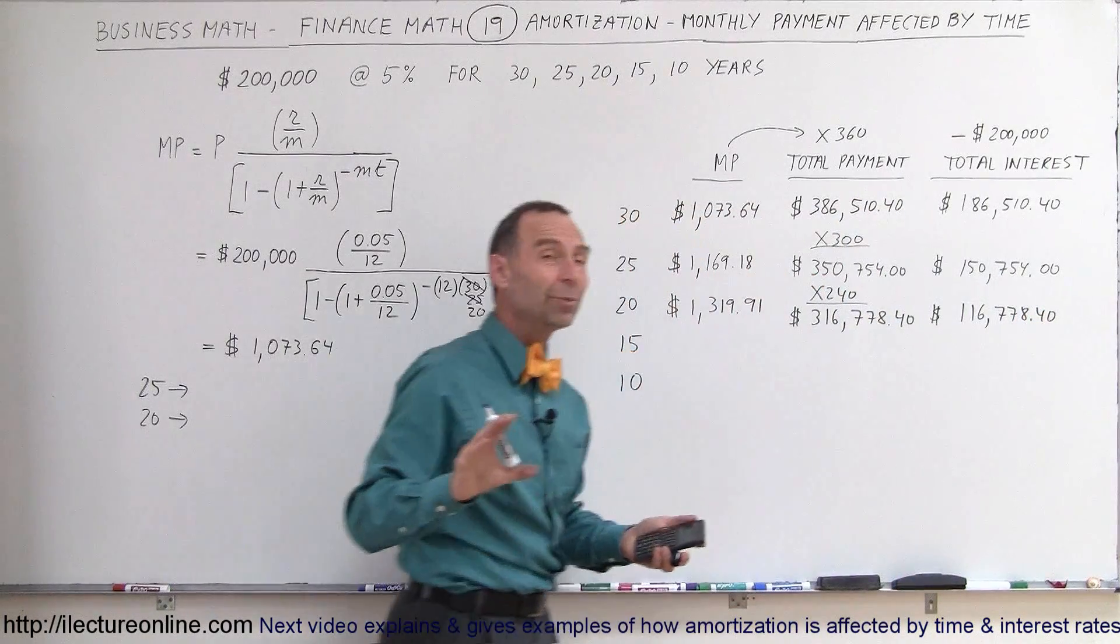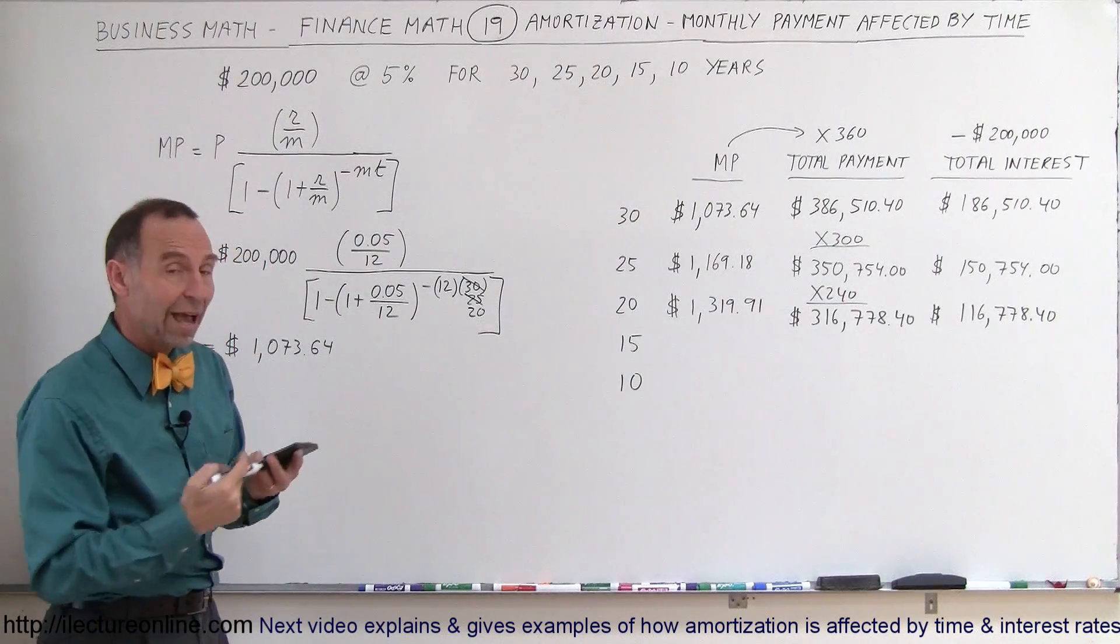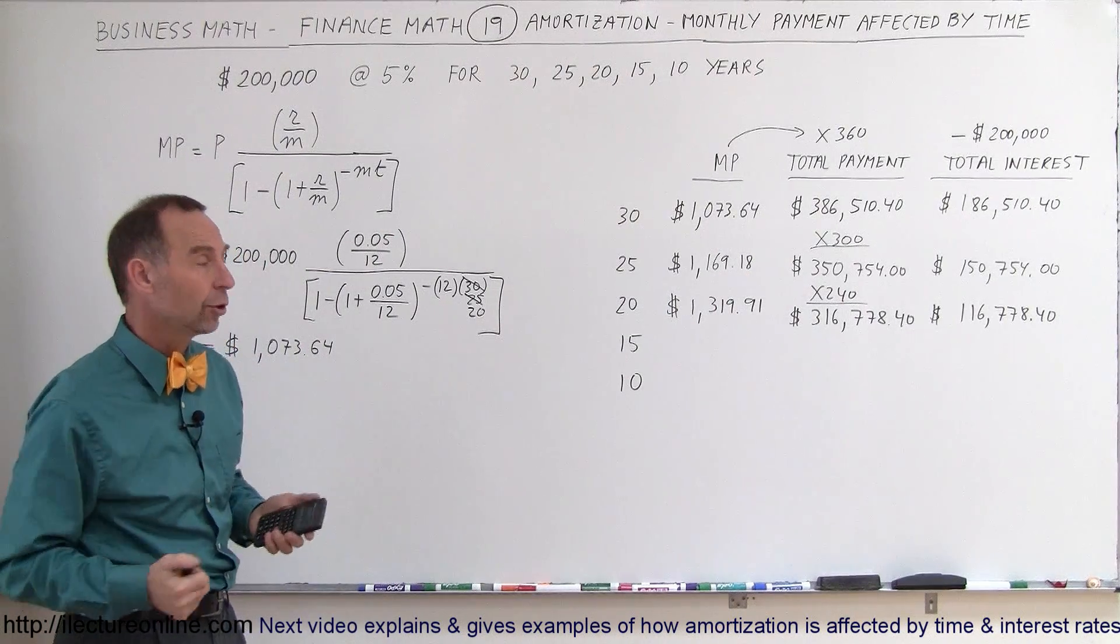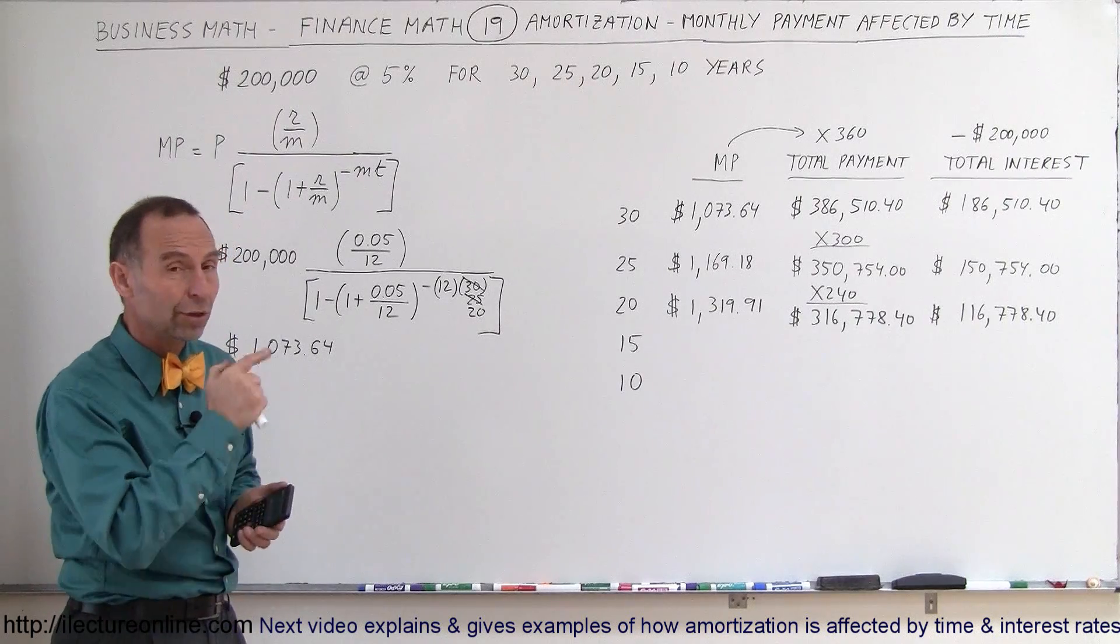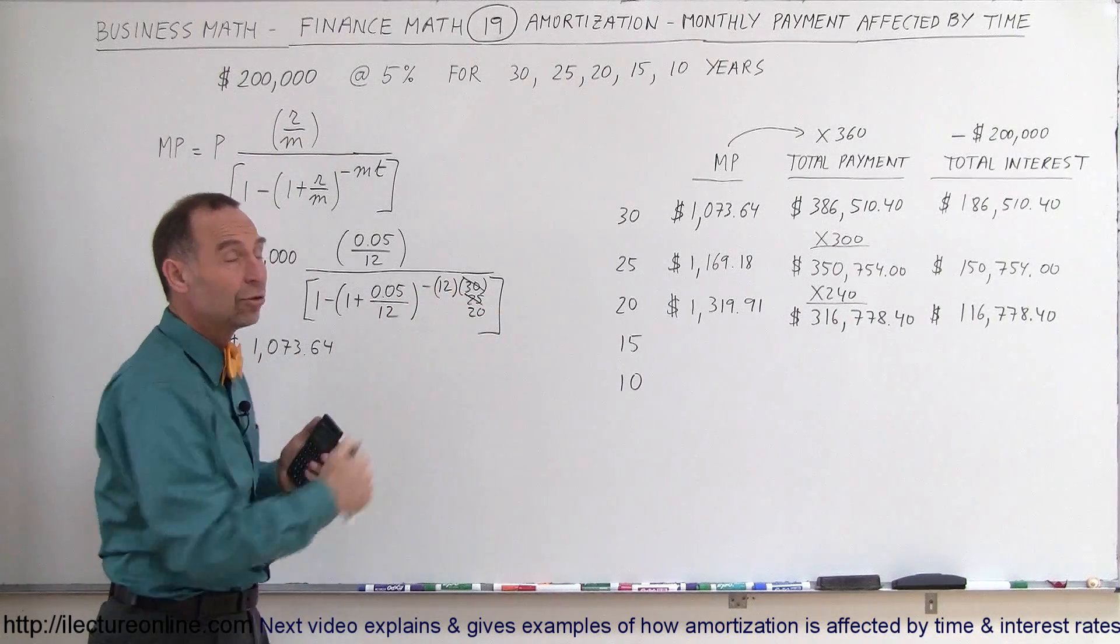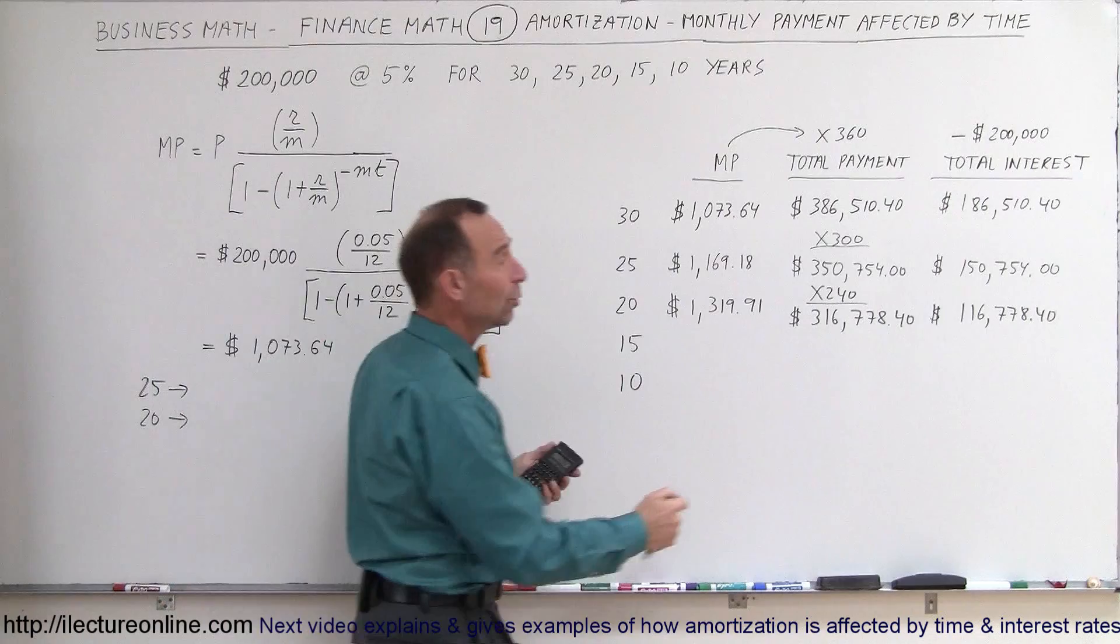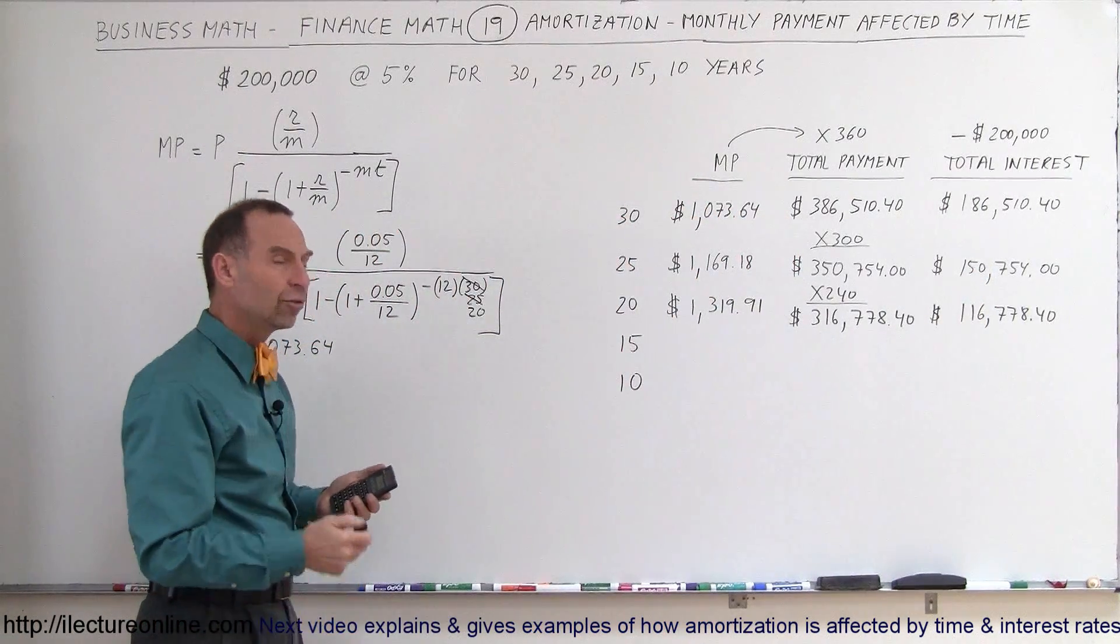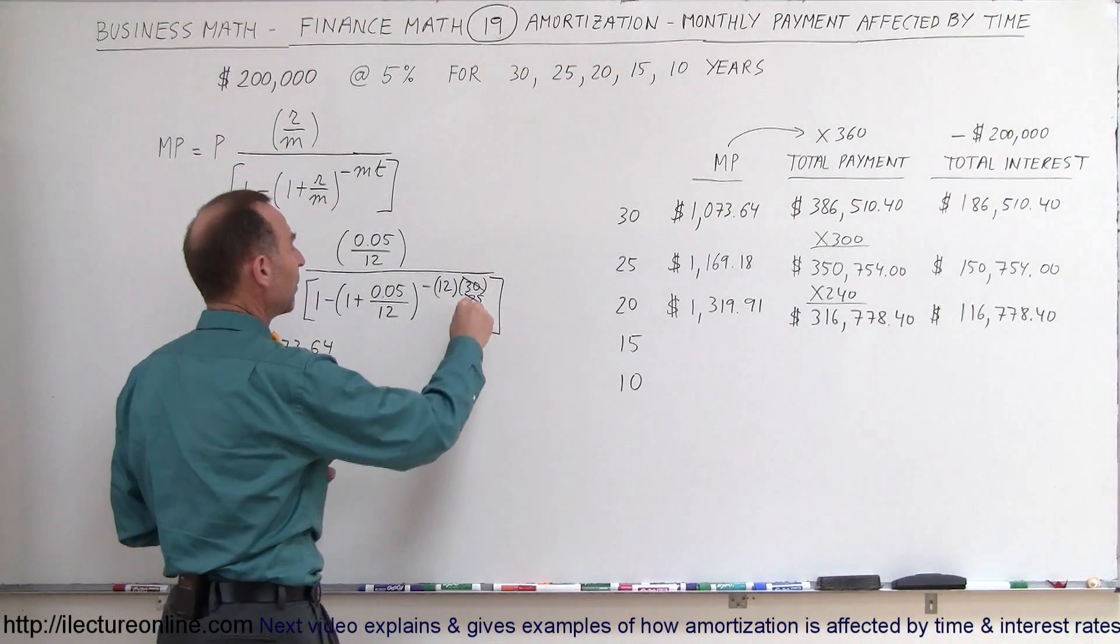So you may not be able to do anything about the interest rates. They are what they are, but you have control over what your monthly payments will be in terms of how long you want to pay off the loan. You can shorten the length of the loan, higher monthly payments, but in the end you can save a lot of money. You will have saved more than $30,000 in interest payments over the life of the loan. Let's go for a 15-year loan and see what happens now.